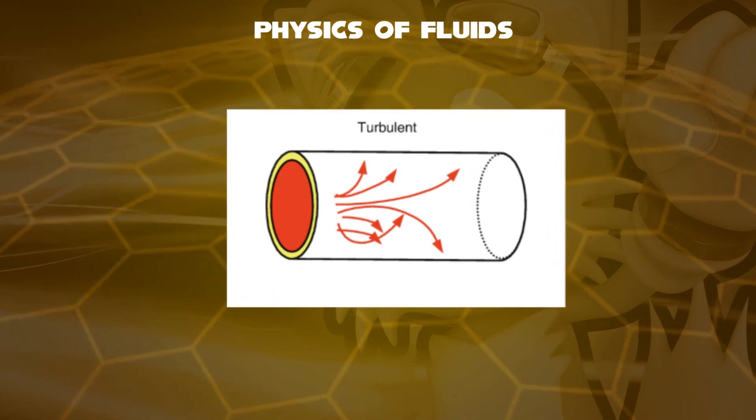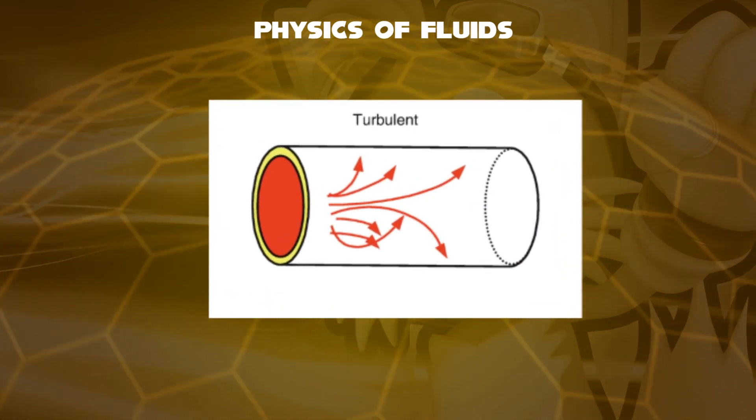And in turbulent flow on the other hand, you can see the arrows are curved randomly. This produces turbulence, it is dependable on Reynolds number.